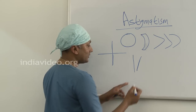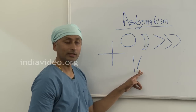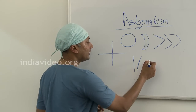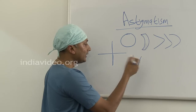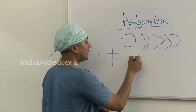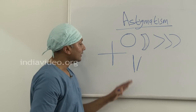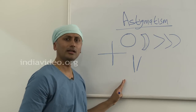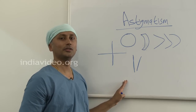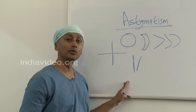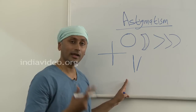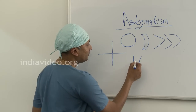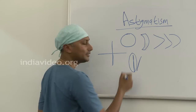The brain knows that the image is not bent and that it is a straight one. So the brain processes it and redraws the image to make it straight. This is the reason why children with astigmatism rarely complain of visual difficulties. They complain mostly of headache, because the brain has to process the straight image,